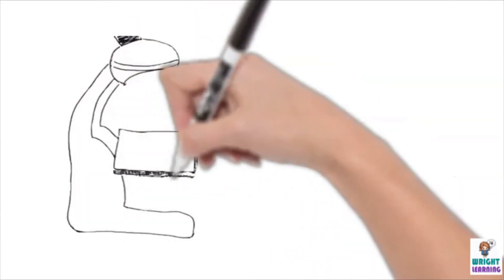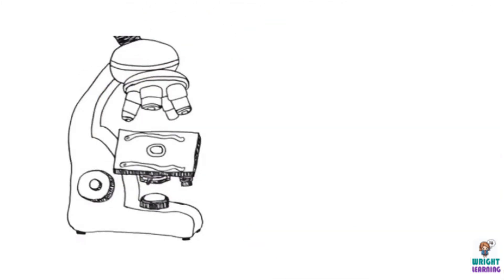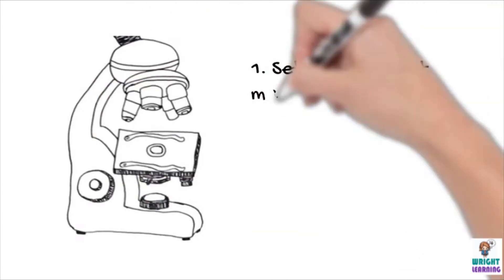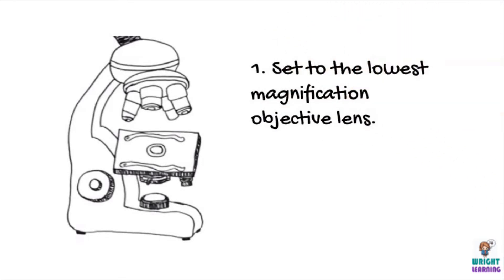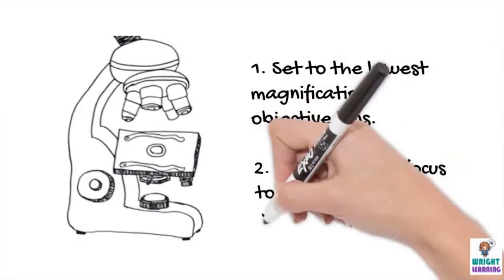To focus your light microscope, set the microscope to view your sample using the lowest magnification objective lens. This is the shortest lens, and is usually red. Then, use the coarse focus dial to bring the stage all the way up before you start focusing.